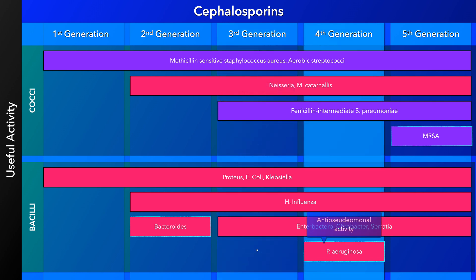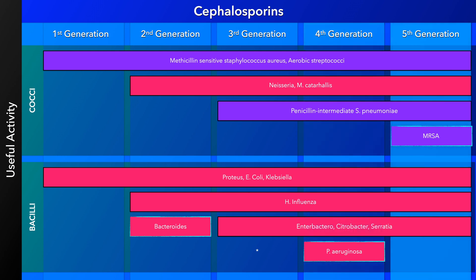Pseudomonal coverage is the defining feature of the fourth generation, represented by cefepime. It is a very strong antibiotic with a wide spectrum of activity, and otherwise has a similar spectrum as third generation cephalosporins. The fifth generation cephalosporins are the only cephalosporins with coverage against methicillin-resistant Staphylococcus aureus. However, unlike the fourth generation, they are not effective against pseudomonas.